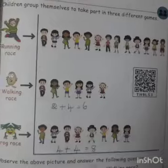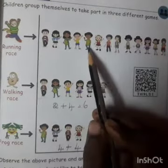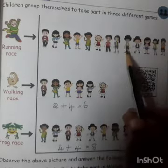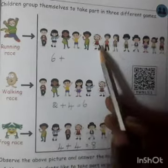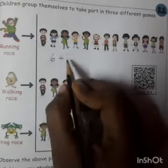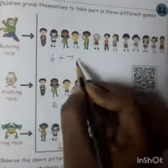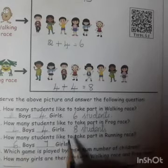How many students like to take part in running race? How many boys are there? 6 boys. How many girls are there? 7 girls. 6 plus 7 equals 13. 6 boys, 7 girls. How many students like to take part in running race? 13 students.